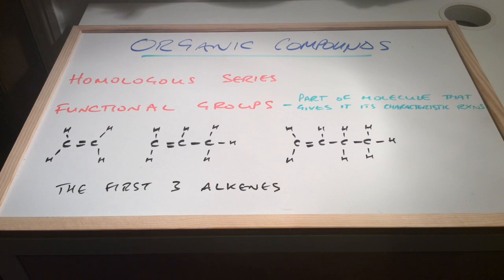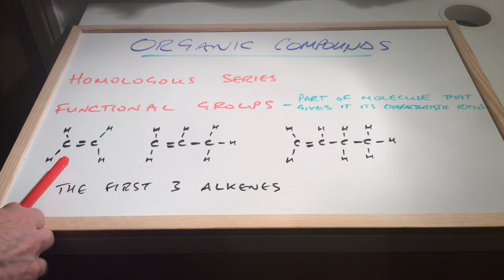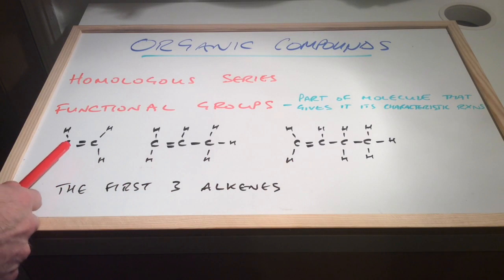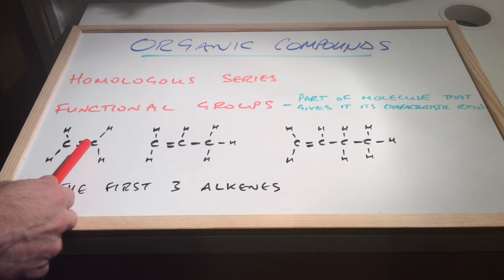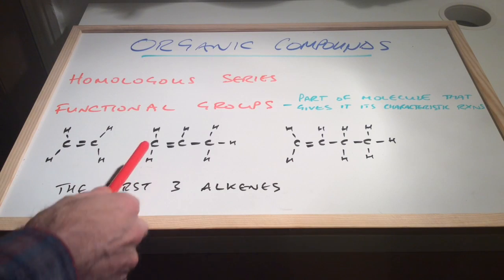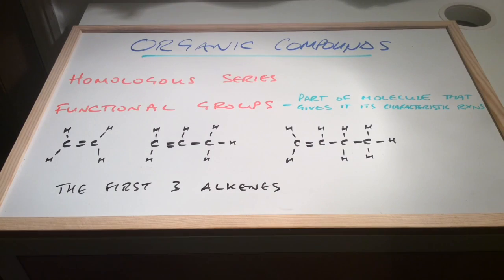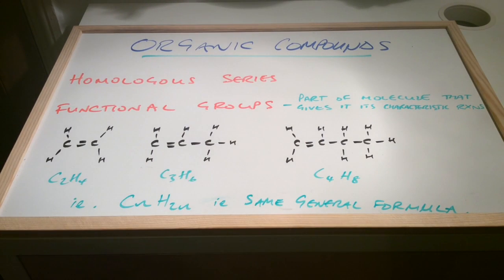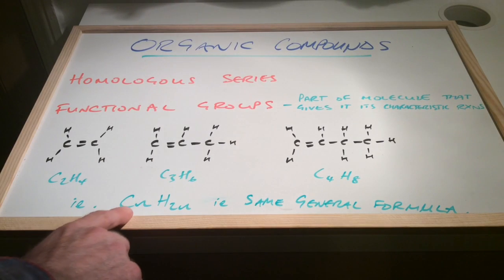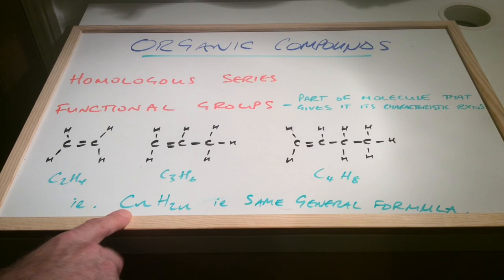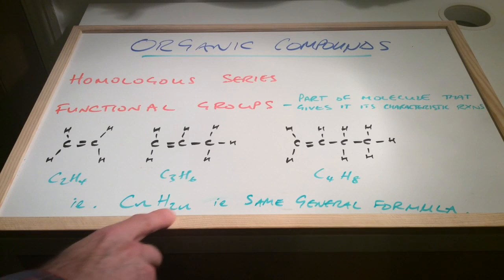You might have spotted something else that's similar about these molecules — it's to do with the ratio between the carbons and hydrogens. In each of these alkenes we have the same ratio: for every carbon we have twice as many hydrogens. So we've got two carbons, four hydrogens; three carbons, six hydrogens; four carbons, eight hydrogens. The three formulae give us a generic formula — the general formula — which is CnH2n.